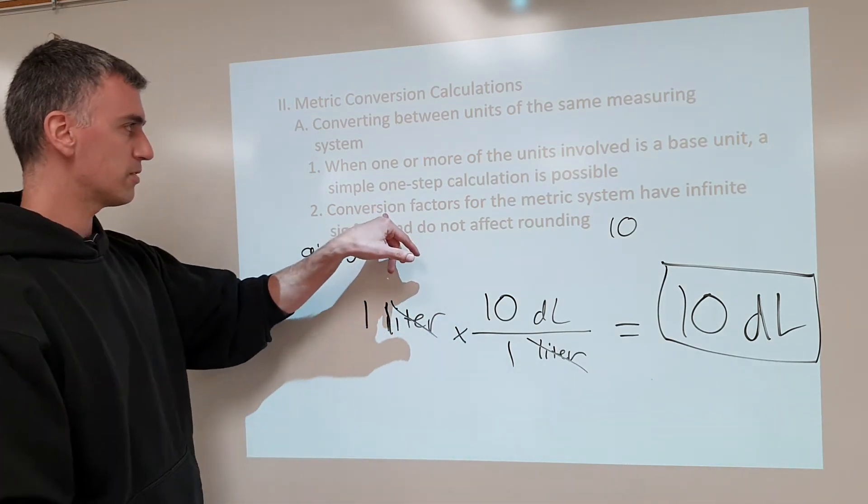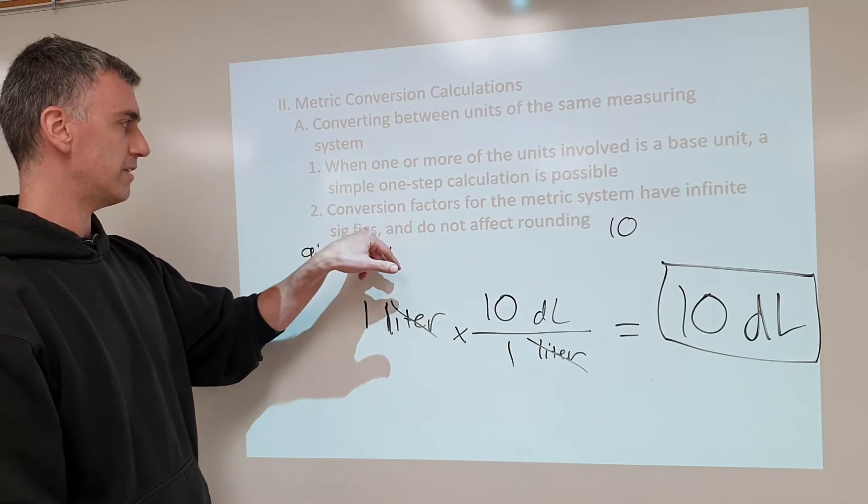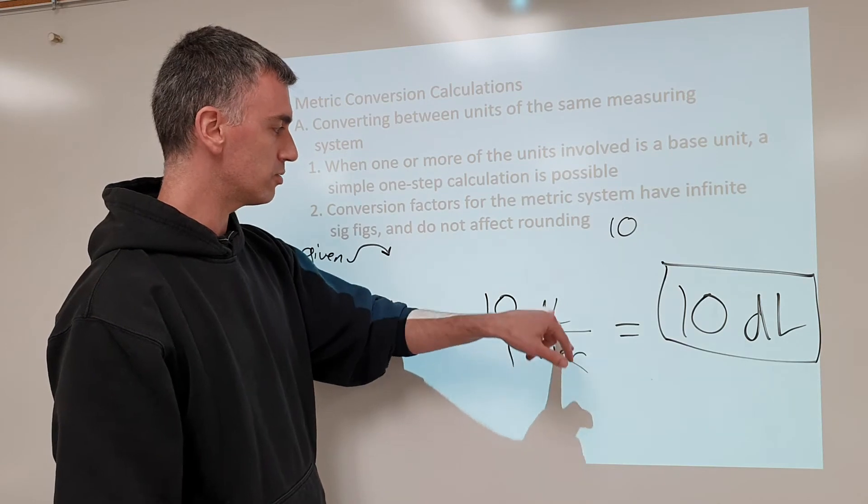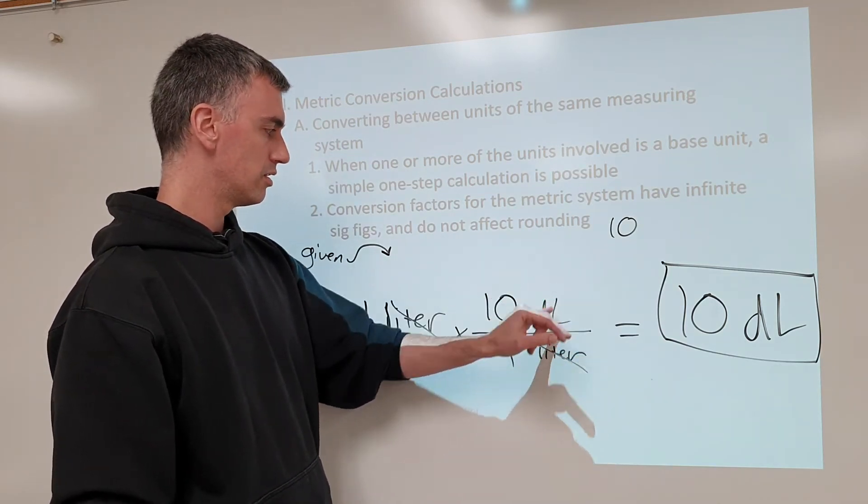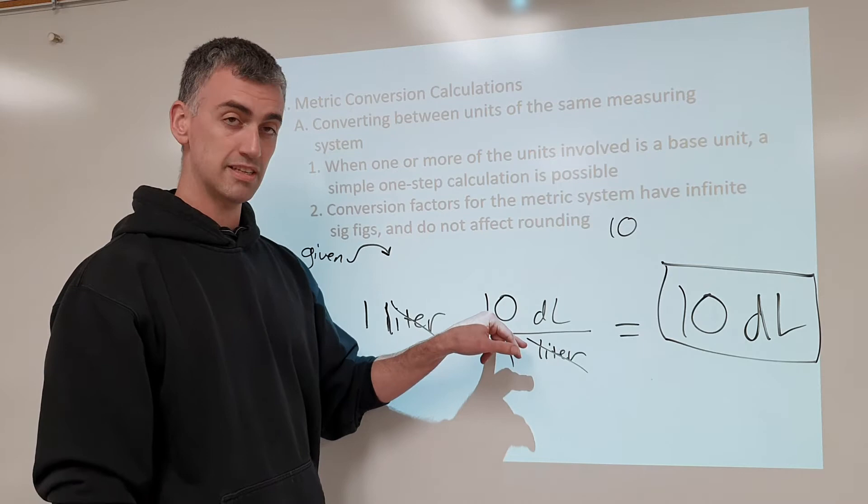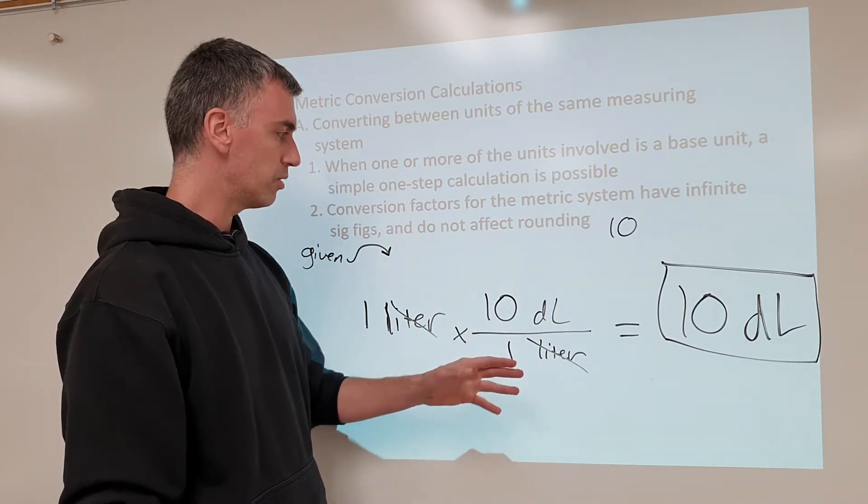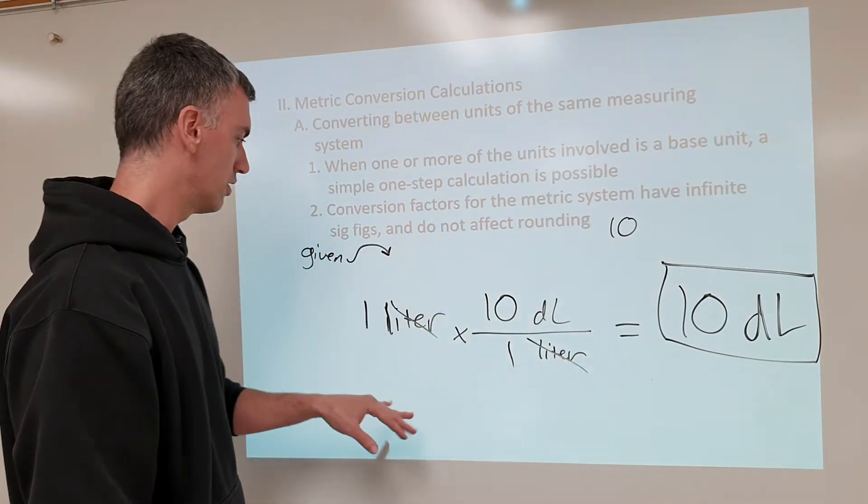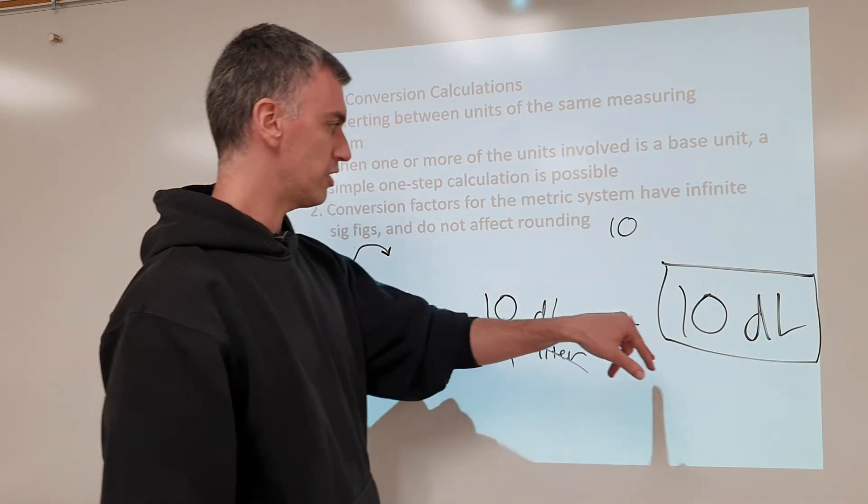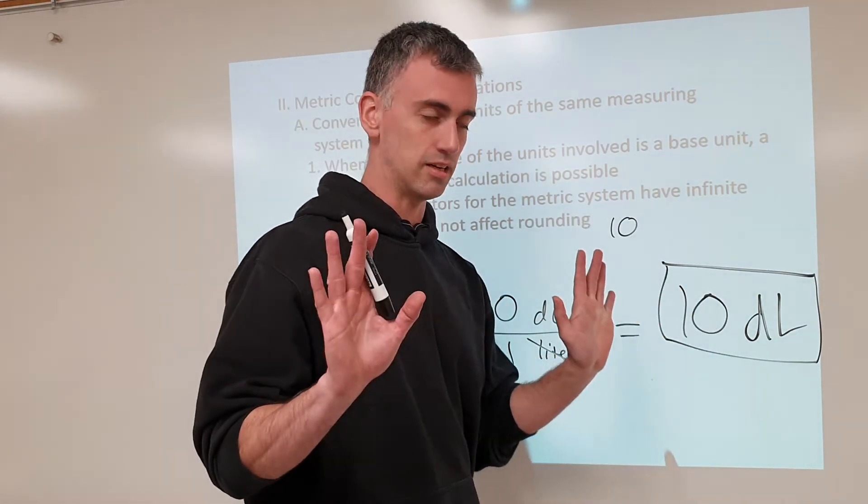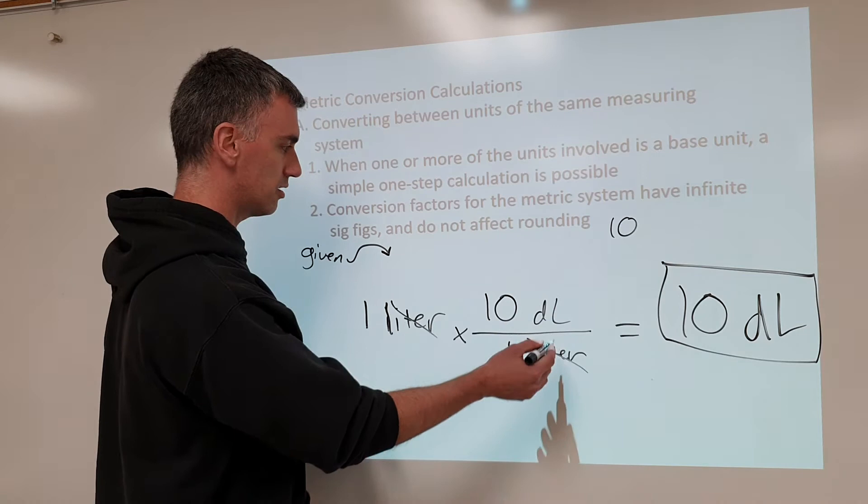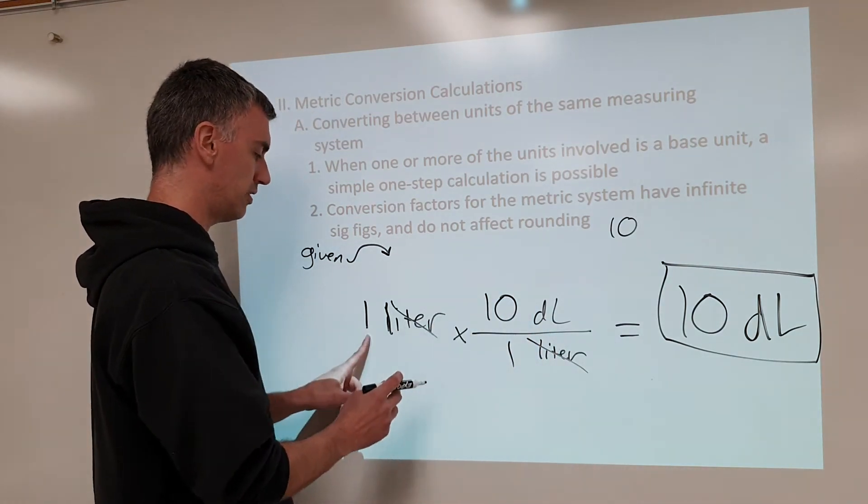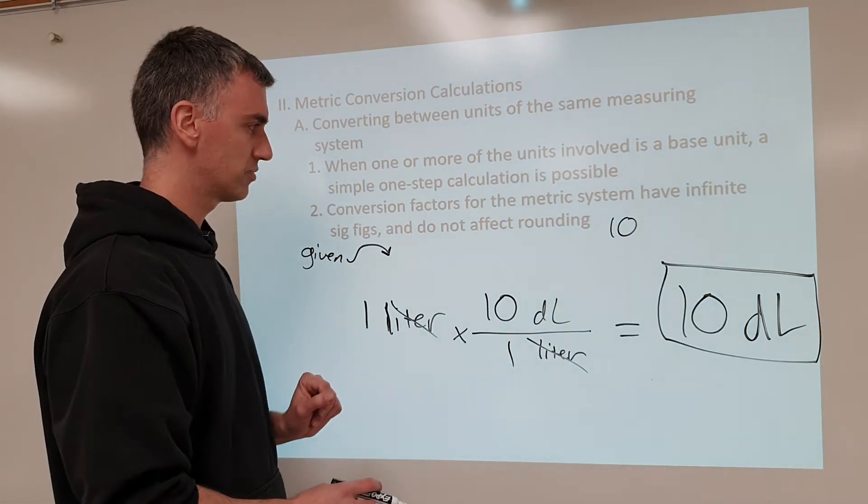Now, a word about rounding. Since conversion factors to the metric system have infinite sig figs and do not affect rounding. That means when you convert from one metric unit to another metric unit, as in liter to a deciliter. I'm aware that this is a 1 sig fig number, and this is also theoretically 1 sig fig, but we treat it as infinite significant figures. In other words, this does not determine how you round your final answer. See this one significant figure right here? We make sure there's one significant figure here, and that's it. Okay? When you're converting between two metric units, don't worry about the number in terms of rounding. It doesn't affect how you round. Only what you started with.